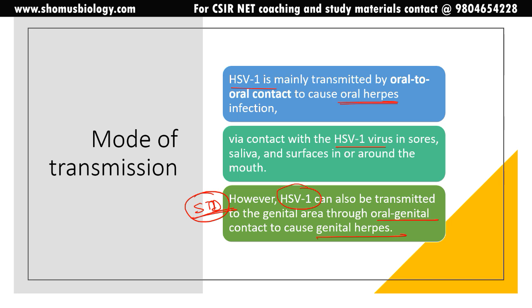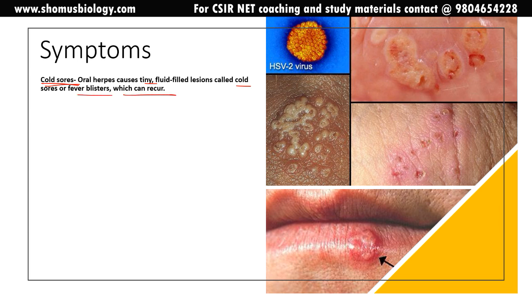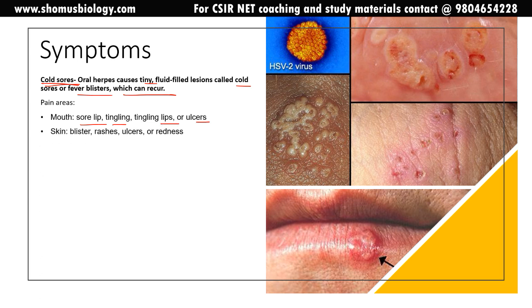The symptoms of herpes virus infection: for oral herpes, it causes tiny fluid-filled lesions called cold sores or fever blisters, which can recur very often. Pain areas include mouth sores, lip tingling, and ulcers in the lips and mouth. On the skin it causes blistering, rashes, ulcers, redness, and a burning sensation.